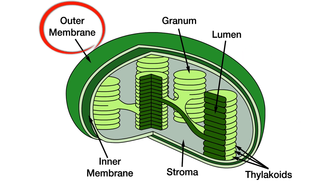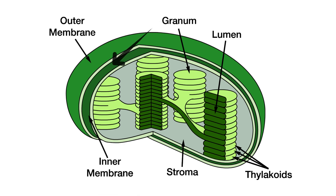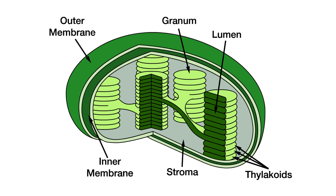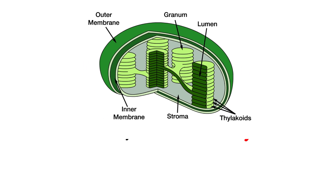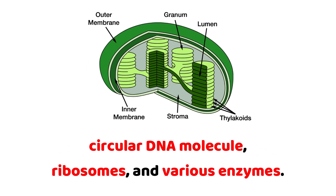Plastids have an outer membrane and an inner membrane, with an intermembrane space in between. The inner membrane surrounds a semi-fluid matrix called the stroma. Within the stroma, you'll find a circular DNA molecule, ribosomes, and various enzymes.